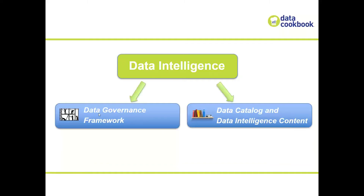That really includes two things. It includes a framework for data governance where you are providing expertise, subject matter expertise, and action on your curation over information around your data. And then it includes all of the content and catalog information about your data. So it combines those two things.